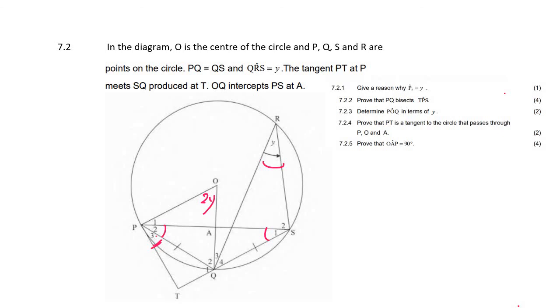So this 7.2.5 took me a bit of time to look and to see it, but what I eventually saw was that OP is a radius. And we know that PT is a tangent. So because of that, we know that this whole angle is 90 degrees. So we can say angle OPT equals 90 degrees. And that's just because the tangent is always perpendicular to a radius.